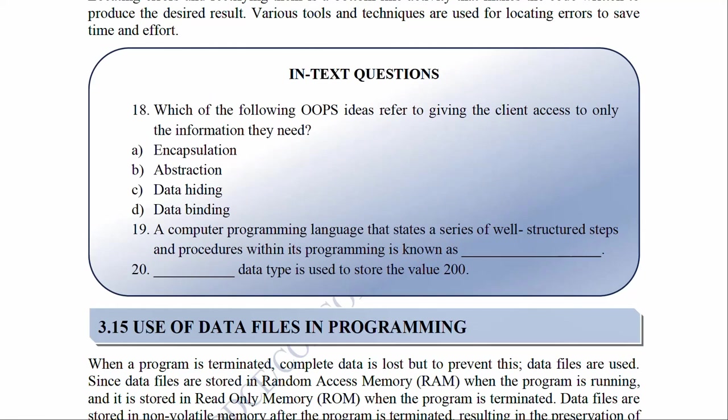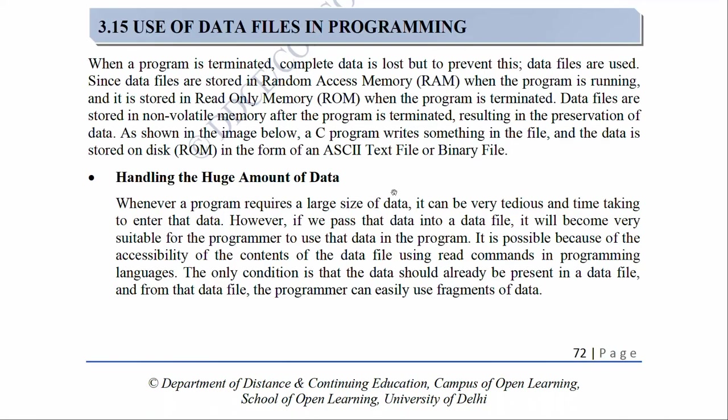In-text questions: Which of the following OOP ideas refers to giving the client access to only the information they need? A. Encapsulation, B. Abstraction, C. Data hiding, D. Data binding. Question 19 — A computer programming language that states a series of well-structured steps and procedures within its programming is known as dash. Question 20 — Dash data type is used to store the value 200.